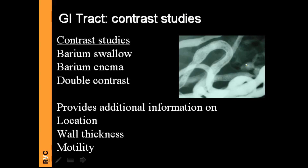We have contrast studies to help us, especially with the stomach and intestine — barium swallow for the upper GI tract and barium enema for the colon. We don't normally perform these now because they are messy and because we have other techniques like CT. Double contrast is especially useful for the stomach to evaluate the mucosal surface. Contrast studies give information about location, wall thickness, and motility. It's tricky to evaluate wall thickness on a survey radiograph because fluid or soft tissue ingesta may silhouette with the wall. For that, you need contrast, ultrasound, or CT.